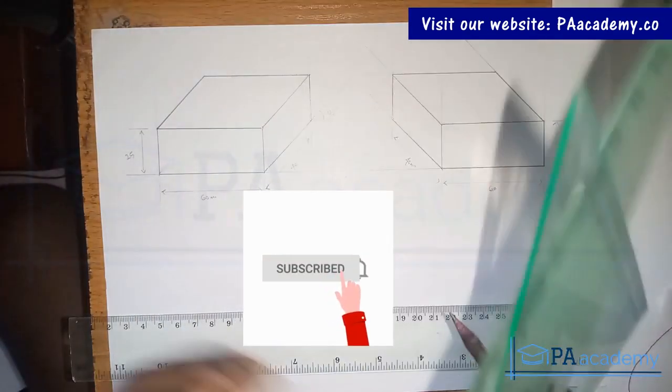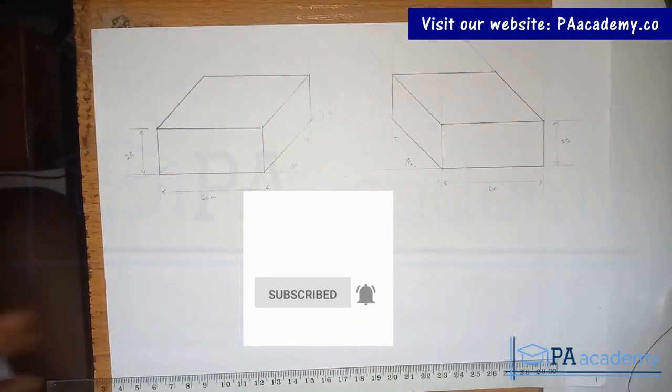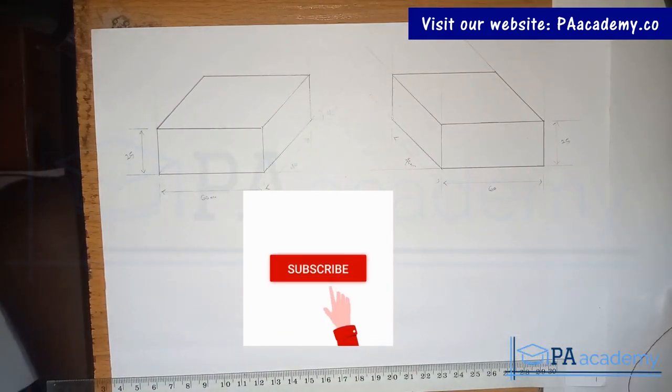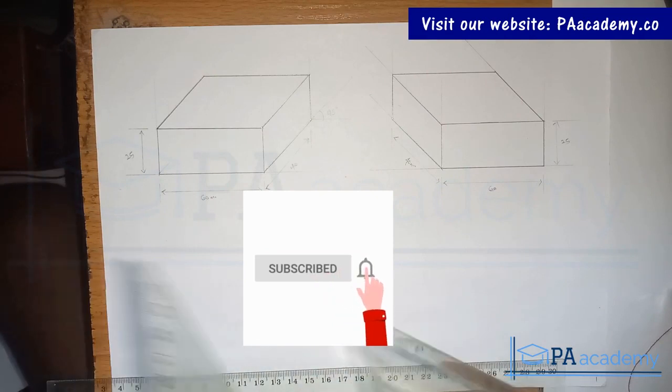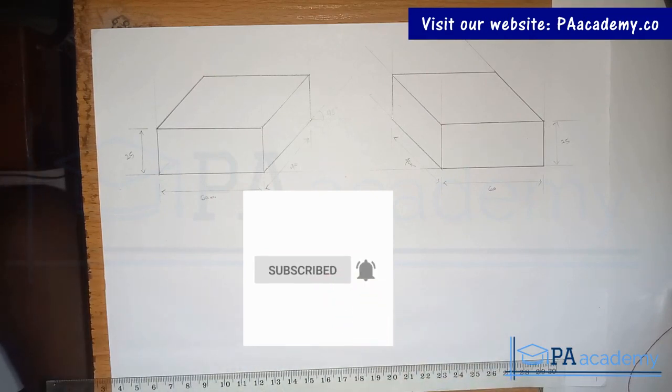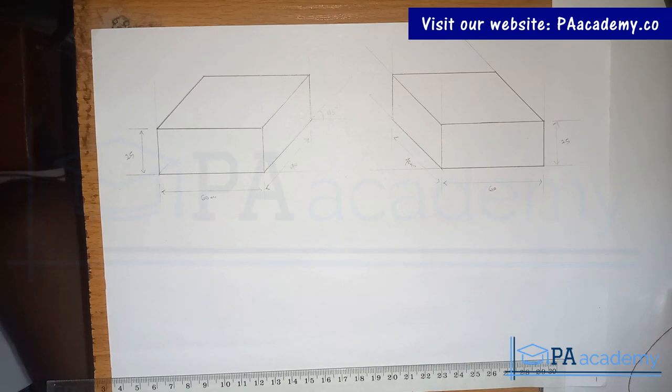So I'll be making use of just the set square and the ruler. So if you are using a board and you have a T-square, you know how to make use of it. I make use of it in drawing isometric, but I won't be doing it here because of the space I'm using.